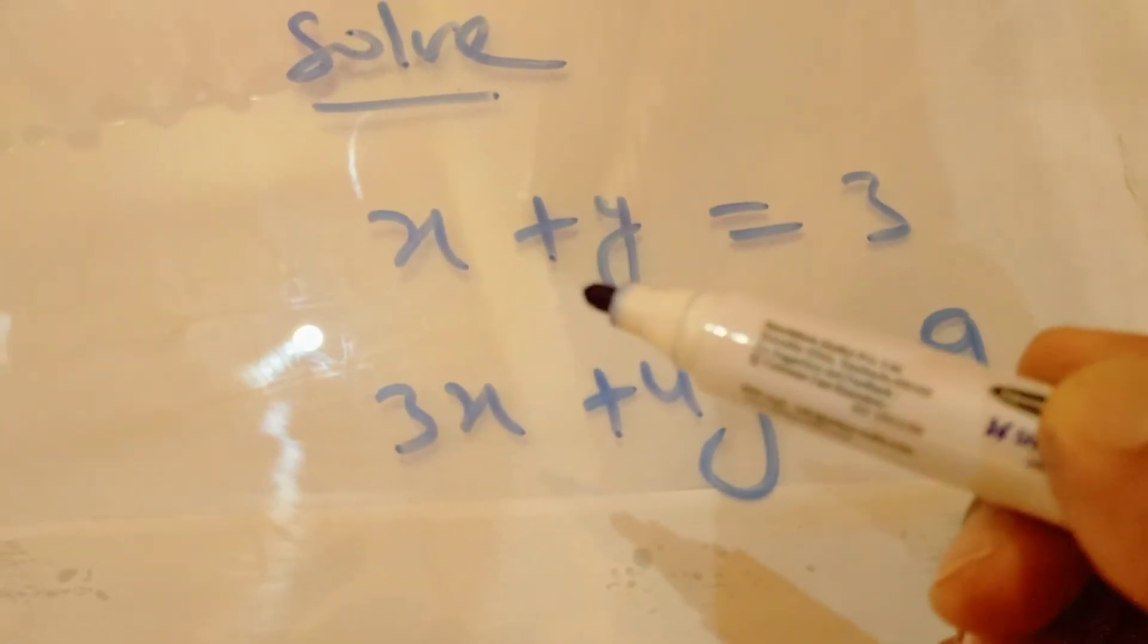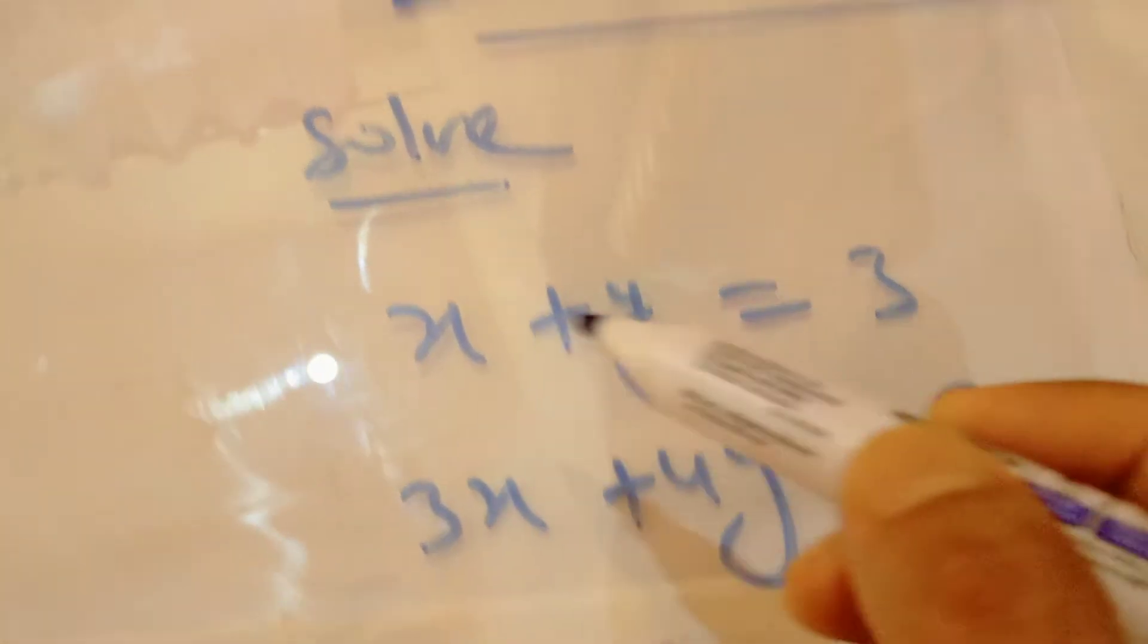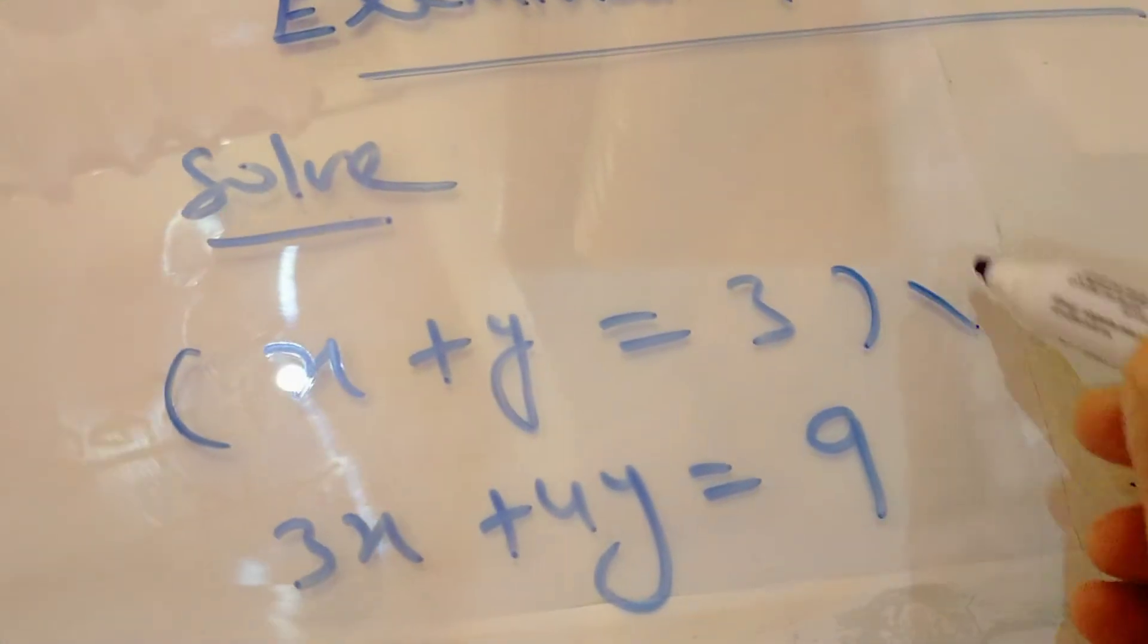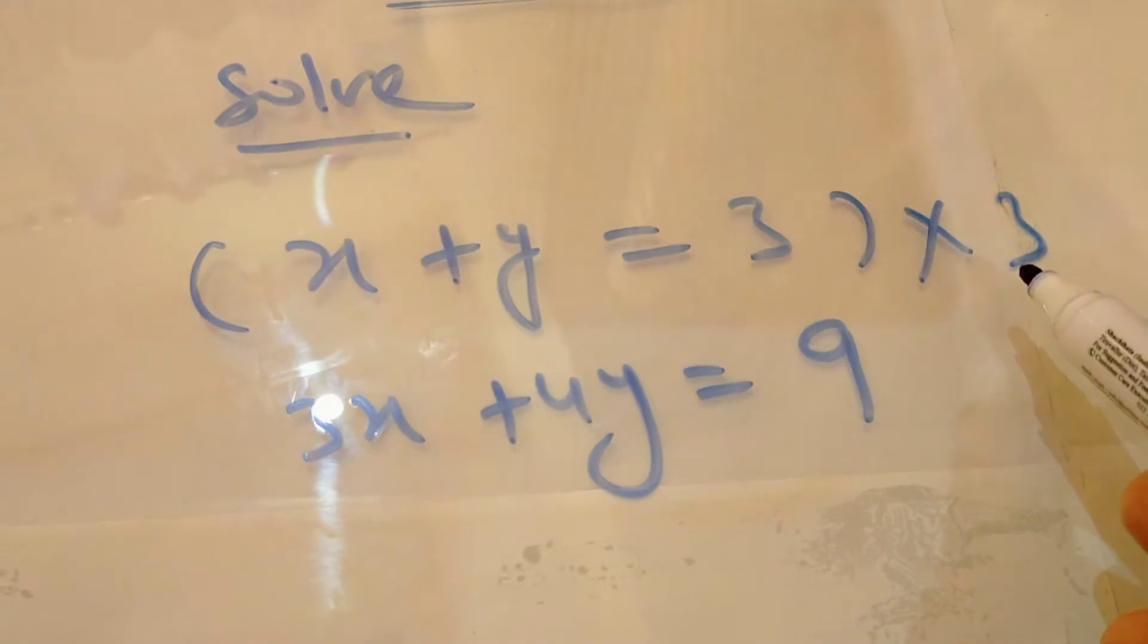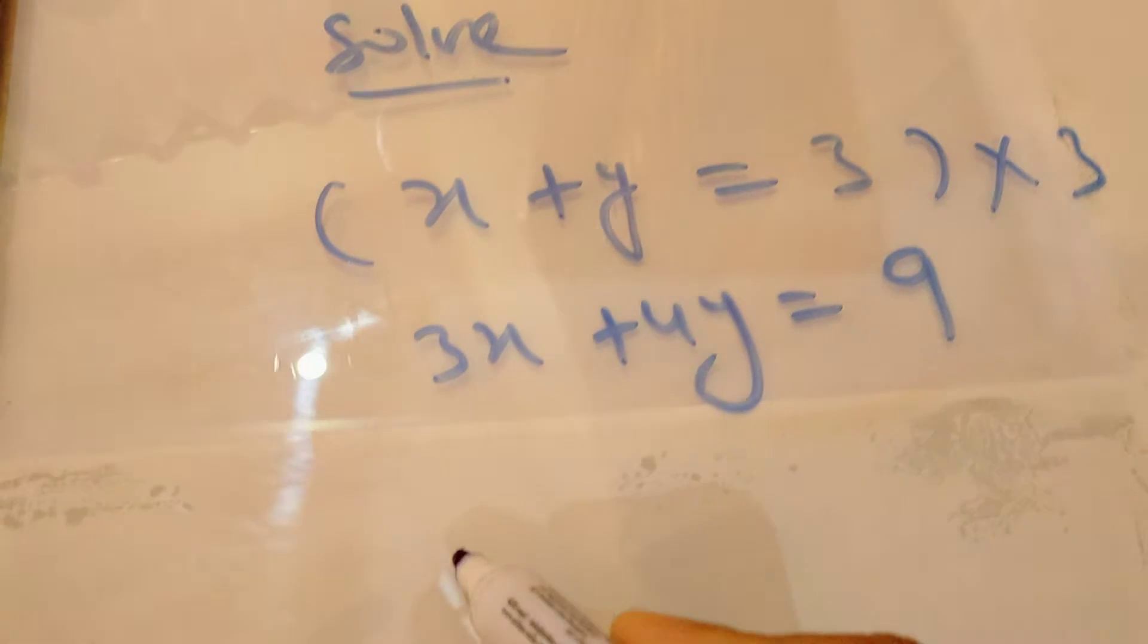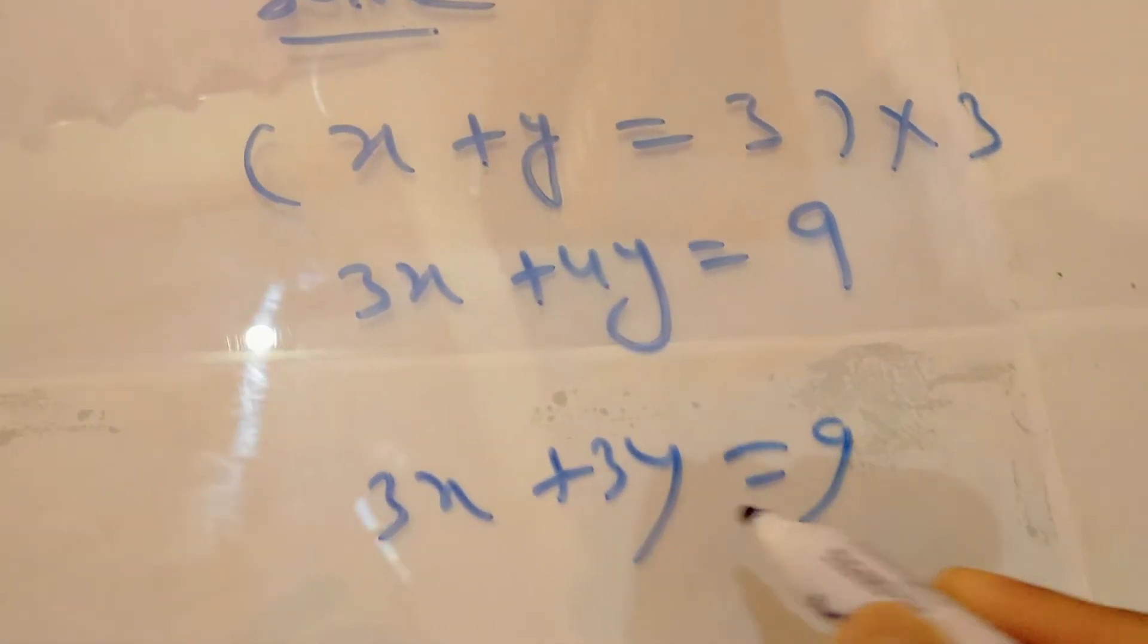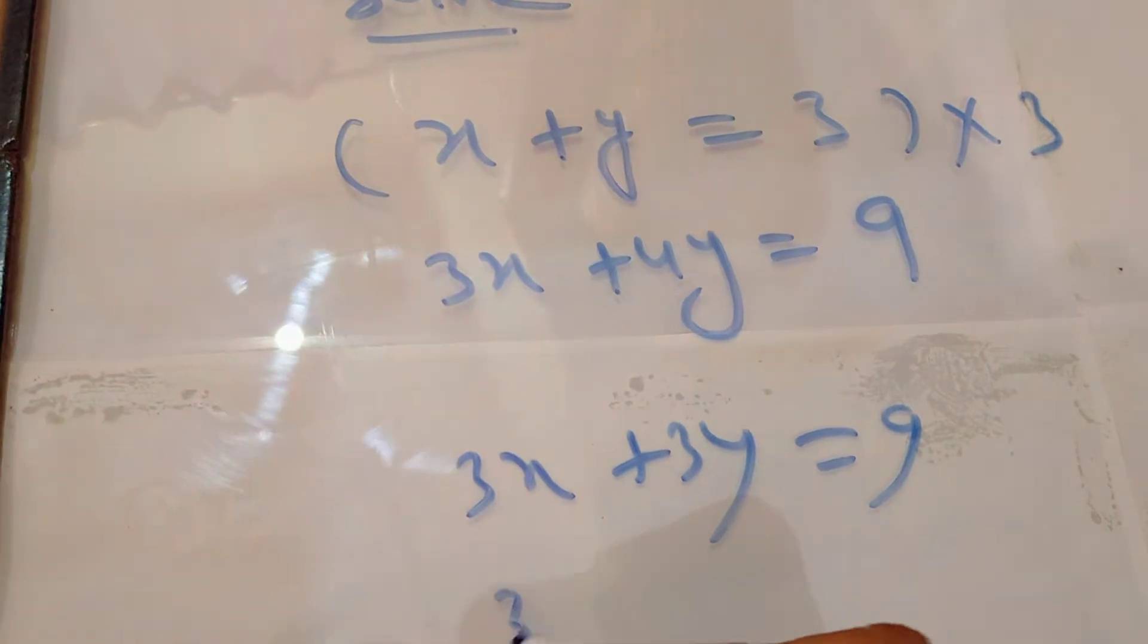Suppose I am deciding that I will make the coefficient of x equal. So I should multiply the first equation by 3. Why multiply by 3? Because if I multiply this equation by 3, then 3 will come here, so it will be 3x plus 3y equals 9. And the second equation is already there, 3x plus y equals 9.